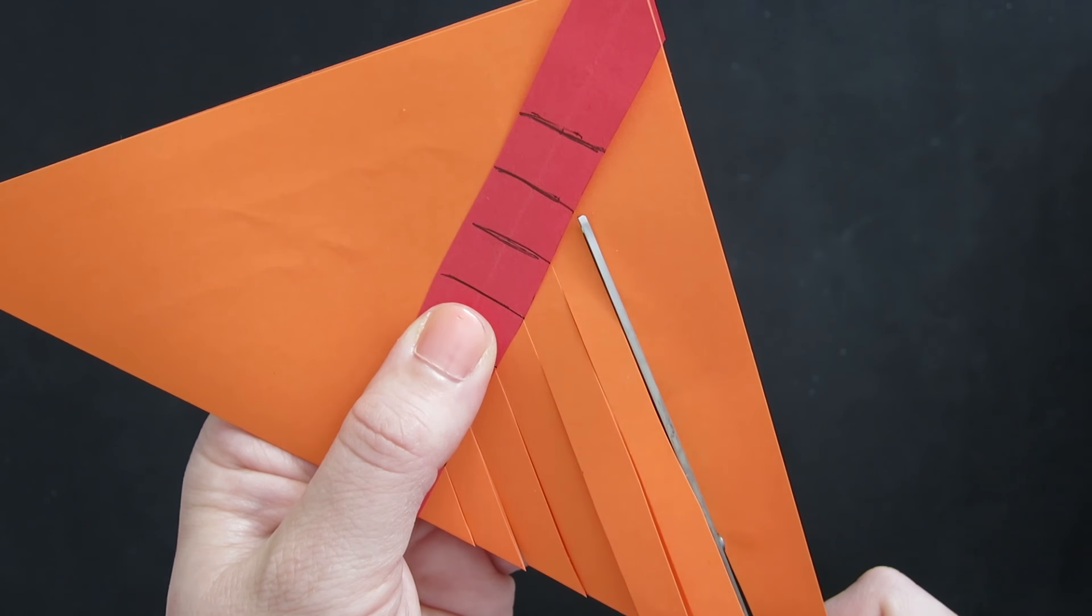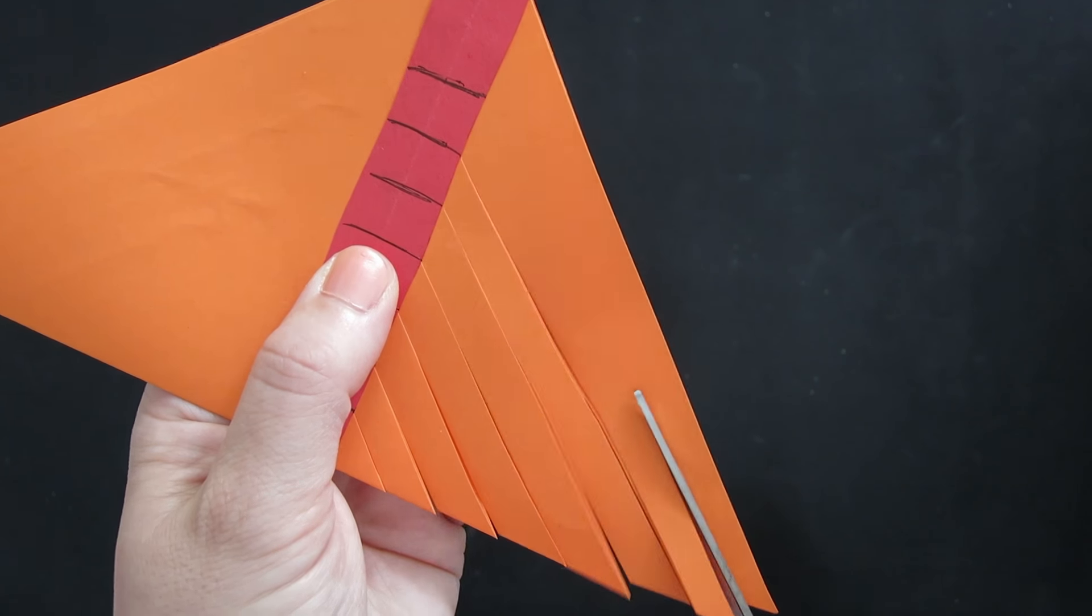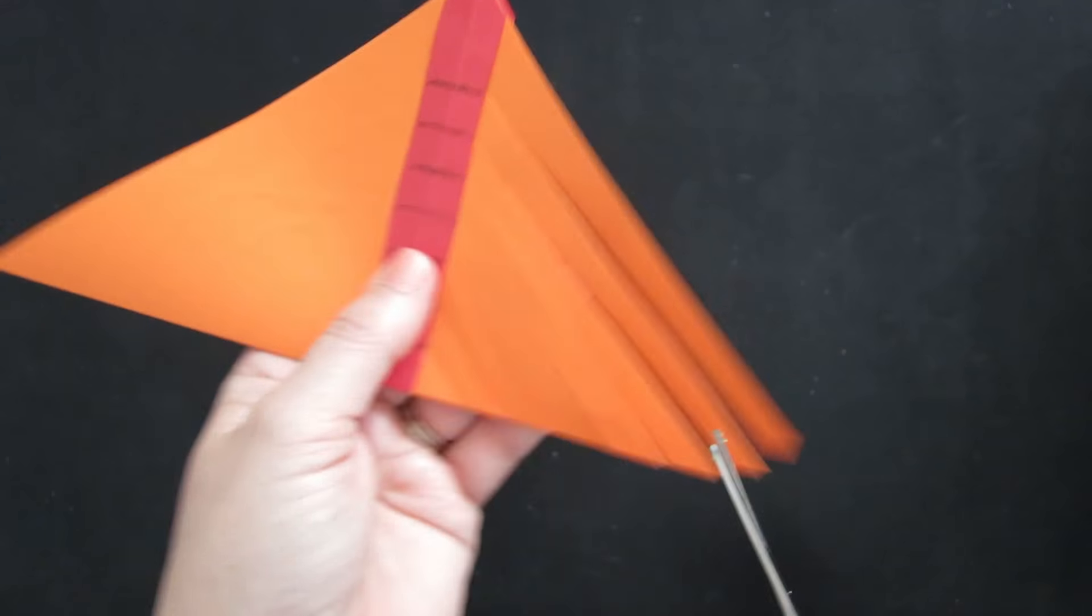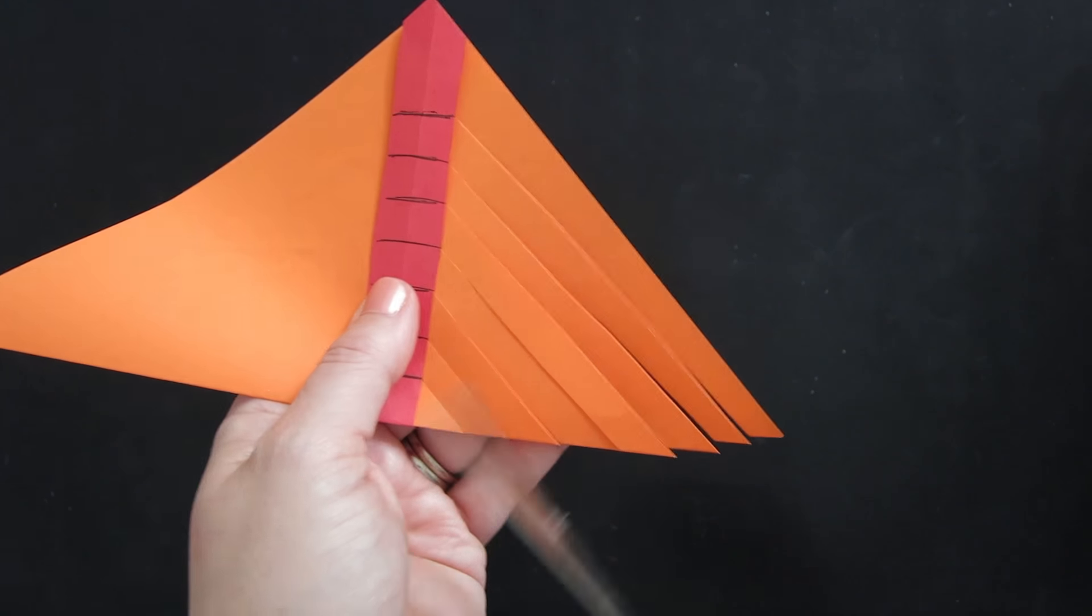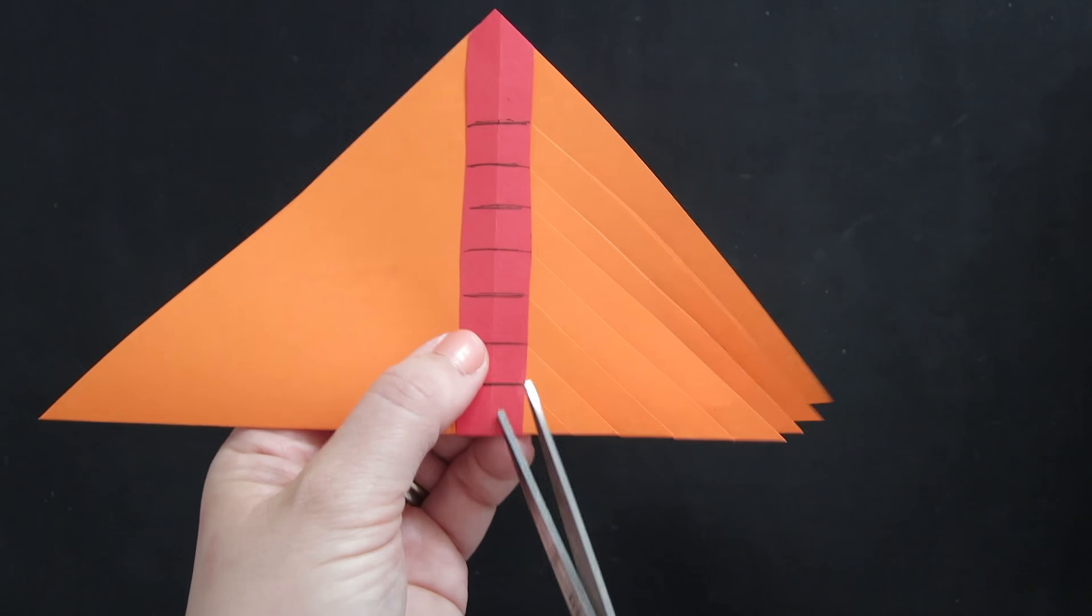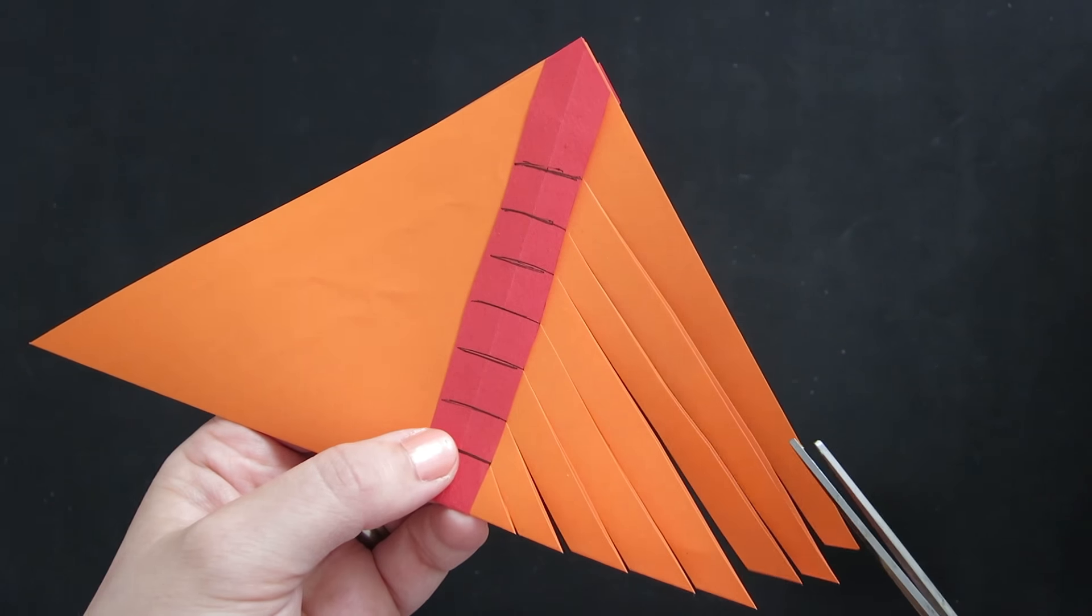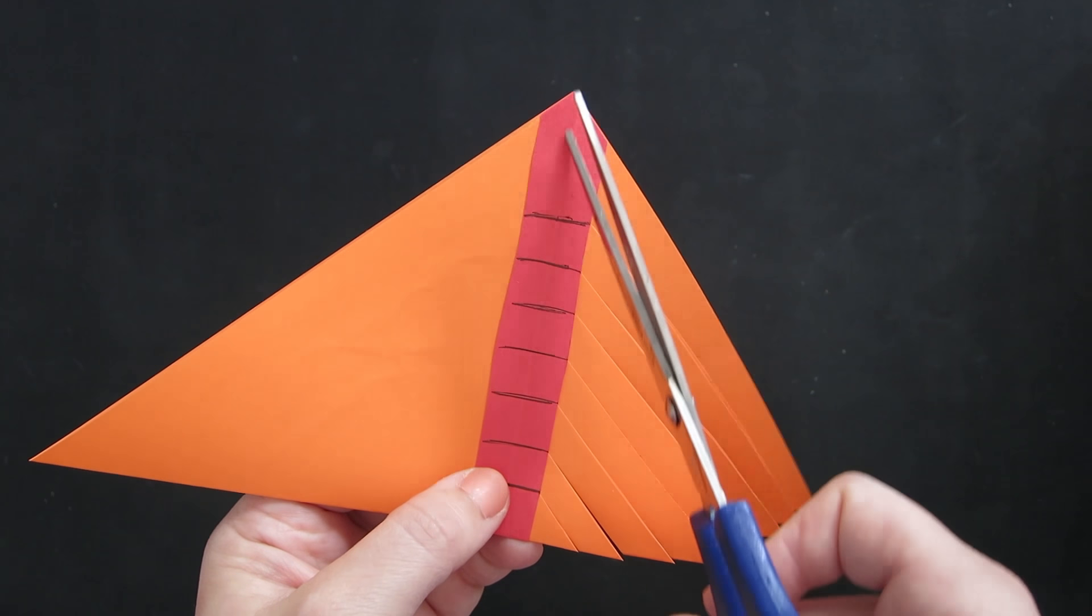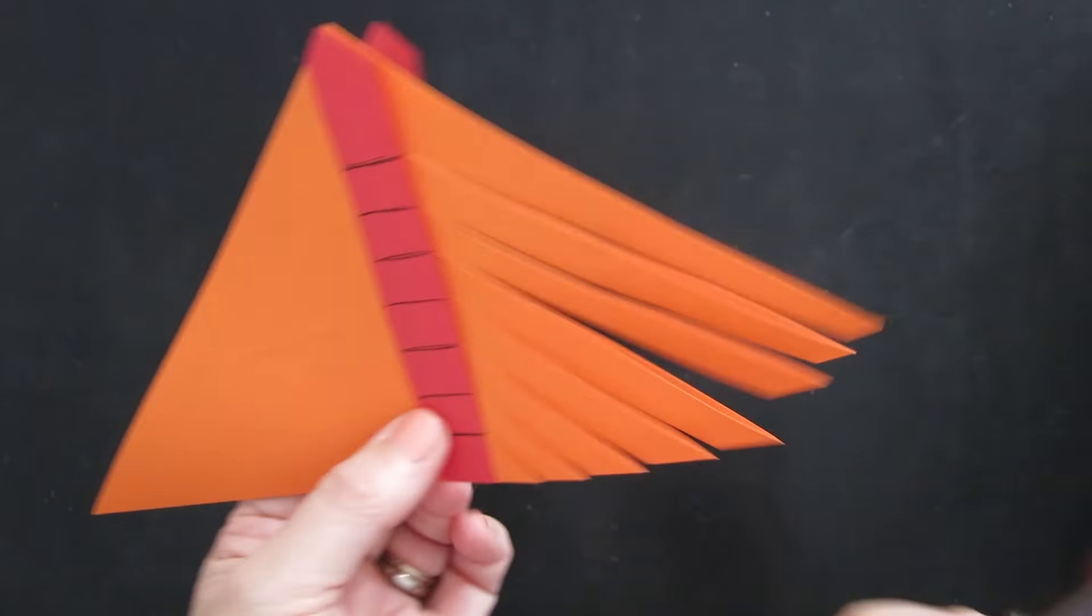Now you may find as you're doing your first one you may find that you're not happy with the size of the strips. That's okay, just change the distance apart that these lines are. So the further apart they are the larger these are going to be and also keeping in mind that that gap at the top needs to be bigger than these other ones otherwise you'll be cutting off the paper.